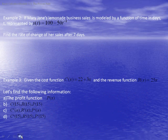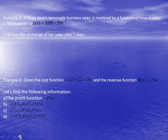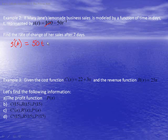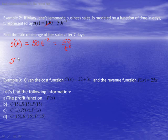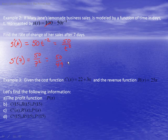If Mary Jane's lemonade business sales is modeled by s(t) = 100 - 50t^(-1), find the rate of change after 7 days. The rate of change is s'(t), the derivative of s(t). The 100 goes away, and we get 50t^(-2), which is the same as 50/t². To find the rate of change after 7 days, we find s'(7) = 50 / 7², which is 50/49. That is the rate of change of her sales after 7 days.